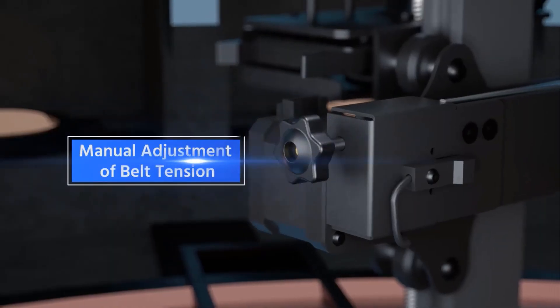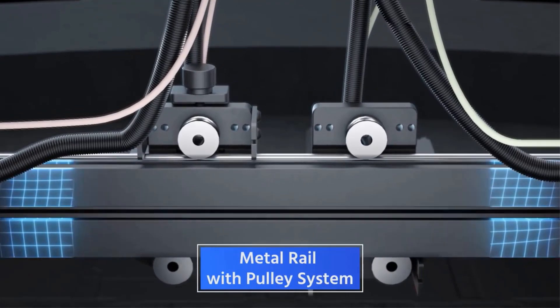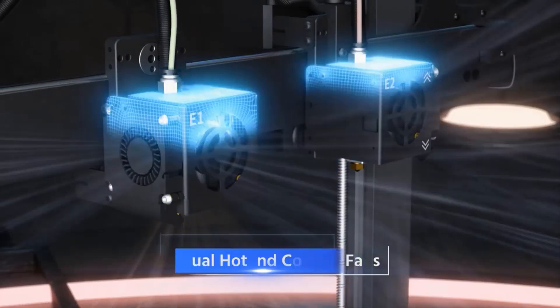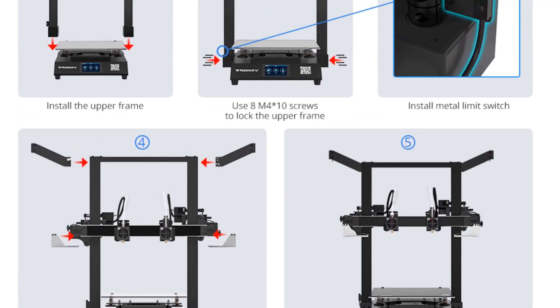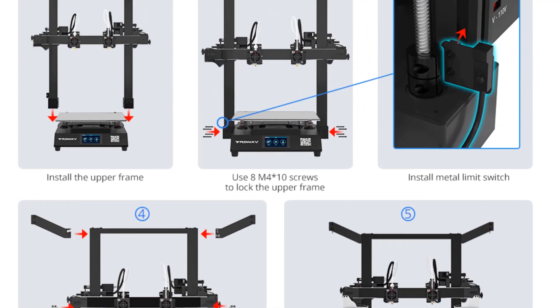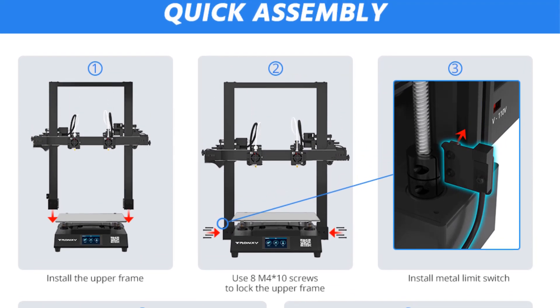The Gemini S is equipped with a lattice glass heat bed, which provides excellent adhesion and helps prevent warping during the printing process. This feature ensures that printed objects adhere securely to the print bed, resulting in more successful and reliable prints.